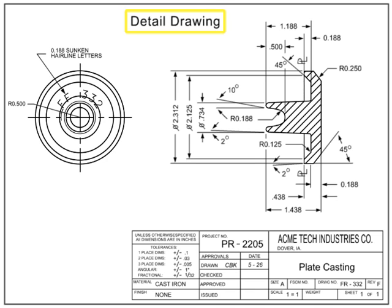A detail drawing is a drawing that contains all the information required for a specific part. There are many different ways a part can come into existence, including casting, machining, welding, purchasing a part, or even modifying an existing part.